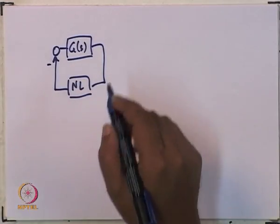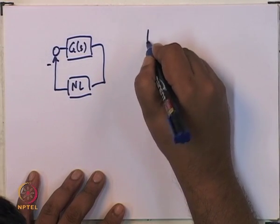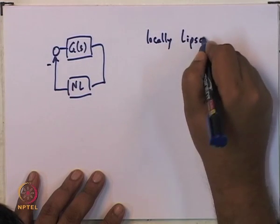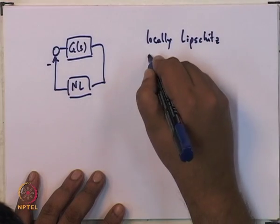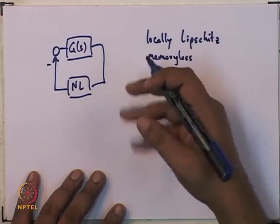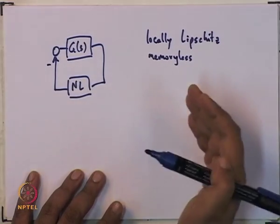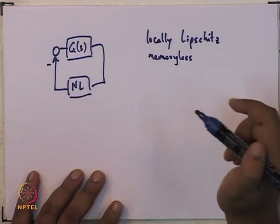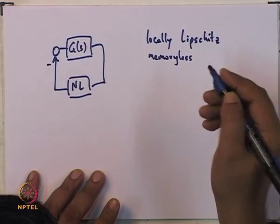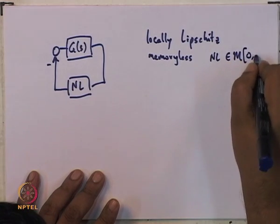The conditions are: first, the non-linearity is locally Lipschitz and memoryless. Locally Lipschitz has something to do with the continuity of the function, and memoryless means it does not depend upon the past. The non-linearity also lies in the sector.